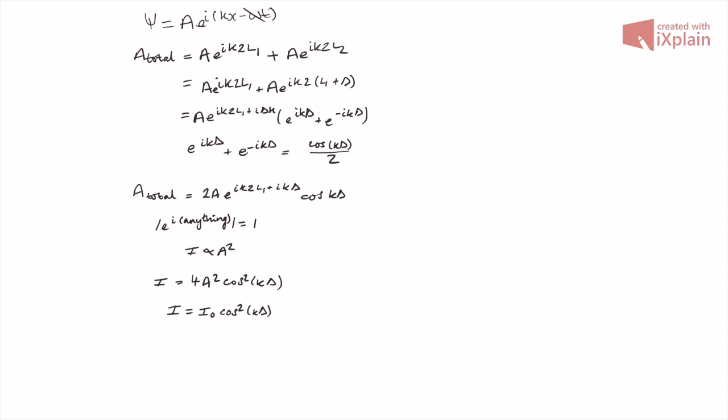Now we can say that the maximum intensity is equal to i nought. This means that the intensity is equal to i equals i nought cos squared k delta.